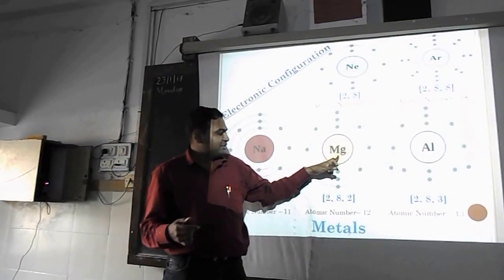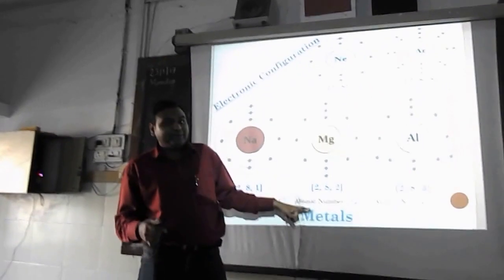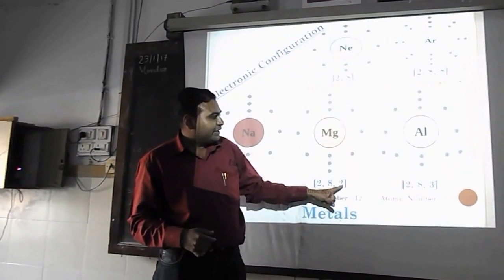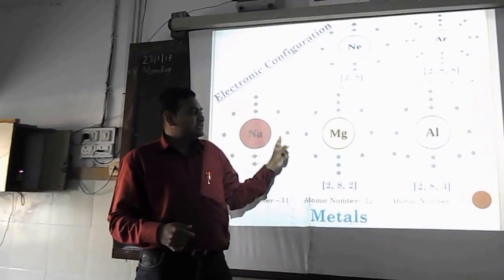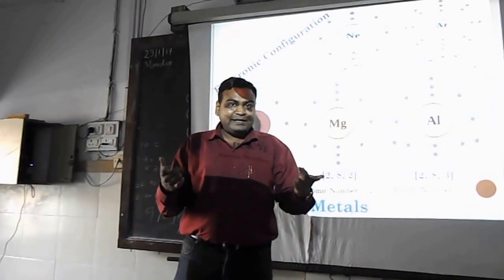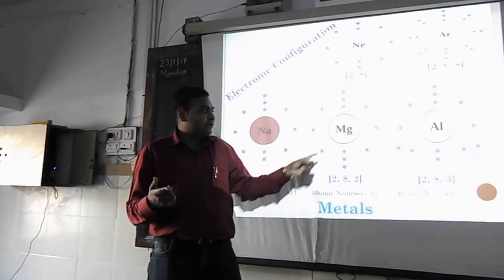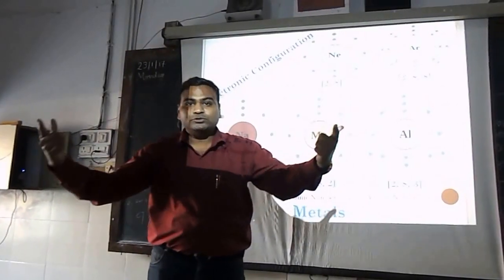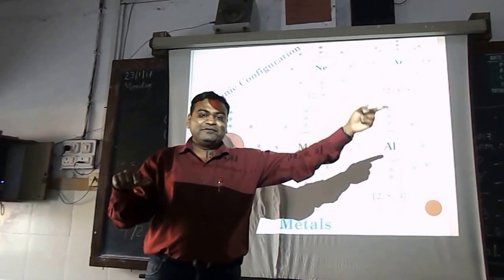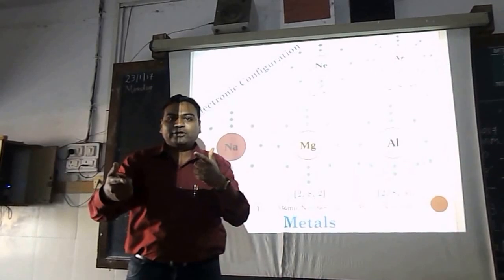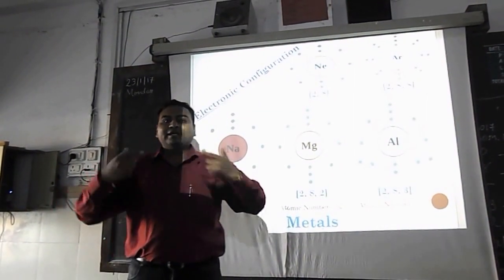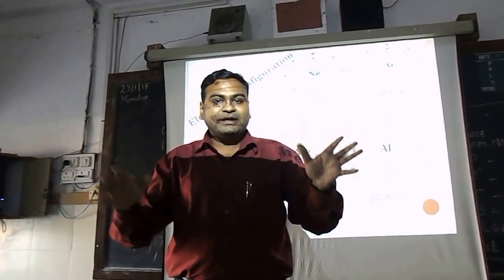Similarly, let's look at magnesium. Magnesium has atomic number 12 and electronic configuration 2-8-2. Its outermost orbit has 2 electrons, so it can easily lose 2 electrons. Due to this loss of electrons it converts into Mg²⁺. Just as sodium loses 1 electron and becomes a positive ion, magnesium loses 2 electrons and converts into a positive ion. Elements that lose electrons and convert into positive ions are called metals.